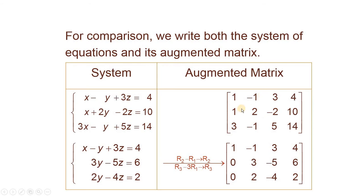Using the operation R2 minus 1 times R1, we get 0, and minus into minus plus 1 plus 2 is equal to 3, and minus 3 minus 3 is equal to minus 5, and so on. Now to make this minus 3 equal to 0, using operation R3 minus 3 times R1, so this 3 will become 0 and these will be the corresponding changes.